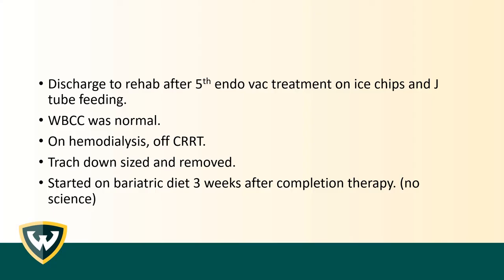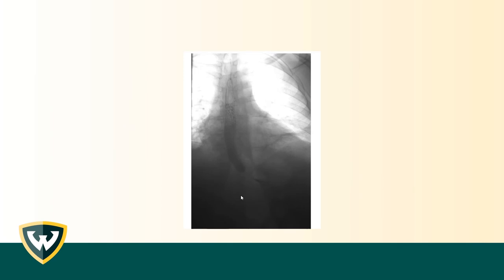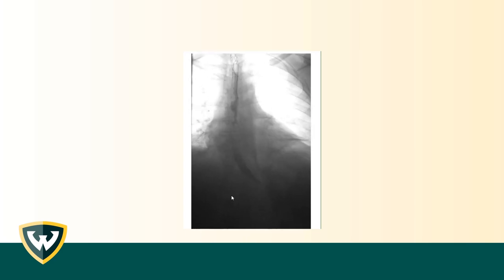She was discharged to rehab after the fifth endoscopic endovac treatment, on tube feeds via J-tube. Her white blood cell count normalized throughout the five endovac sessions. She came off CRRT, transitioned to hemodialysis, and her trach was downsized and eventually removed. She was started on a bariatric diet three weeks after completion of therapy. This is her upper GI study performed two months later — the esophagram looks really nice, nothing leaking out, and I was very excited to see complete healing.